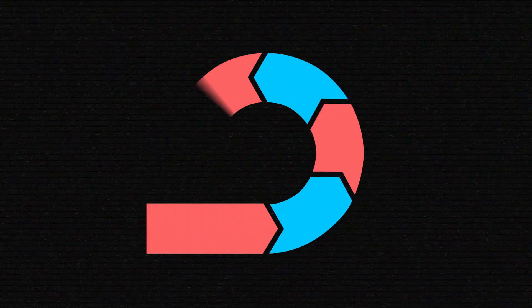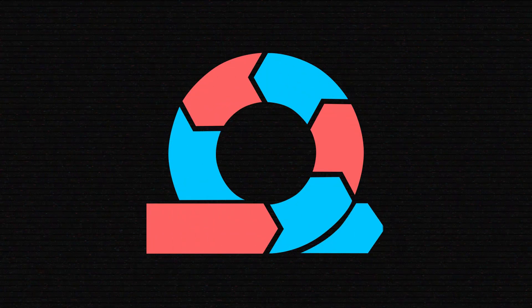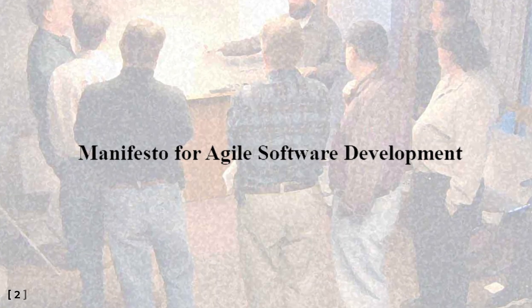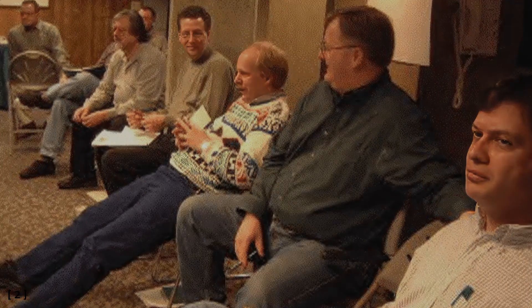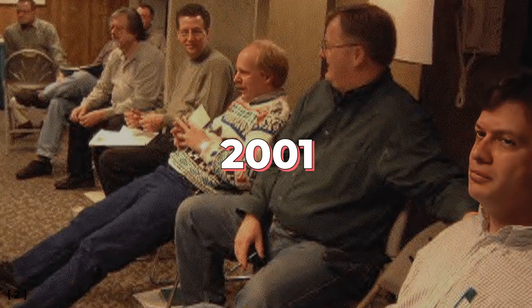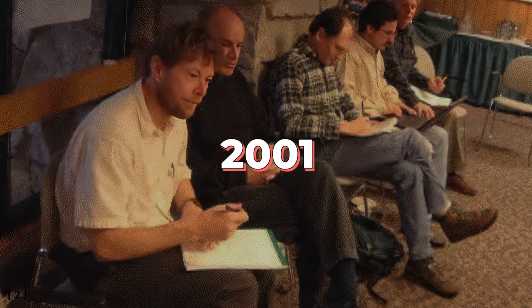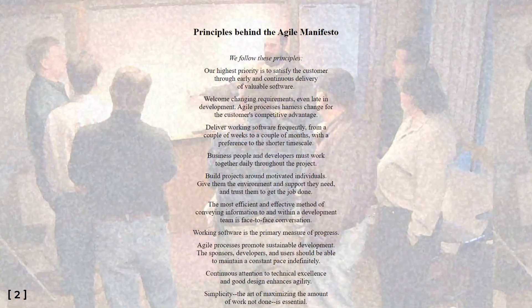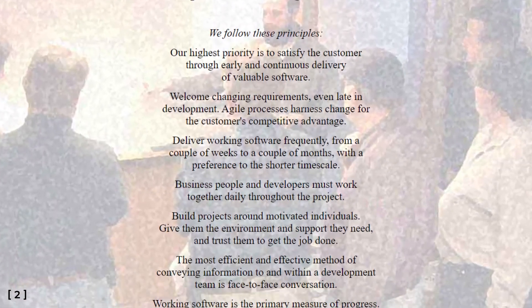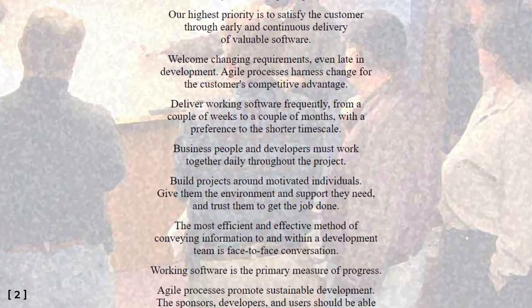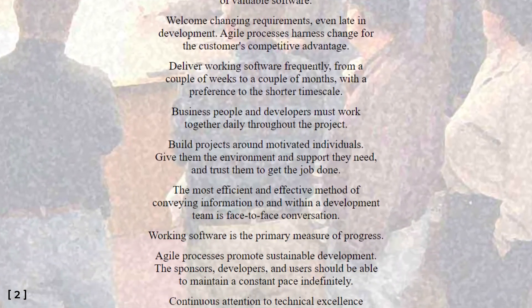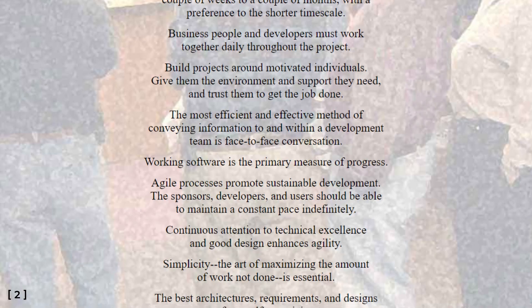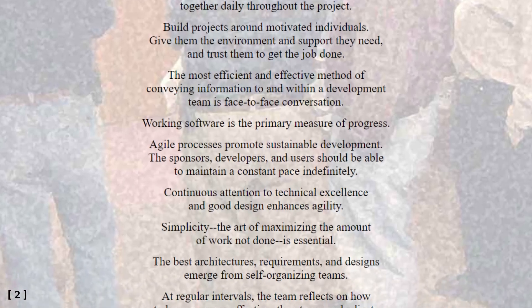Today, Agile philosophy is the king. The Agile Manifesto, written by 17 software developers in 2001, was a direct response to the heavyweight waterfall methodology. Among its twelve principles, there are calls to welcome change even in late development stages, and to deliver software continuously and early.